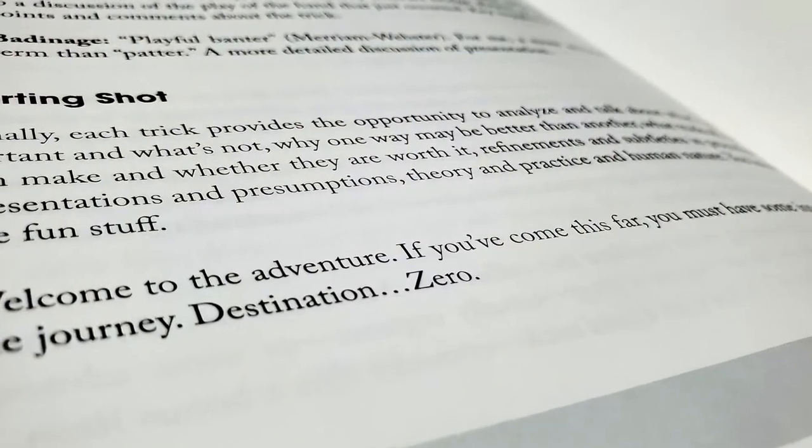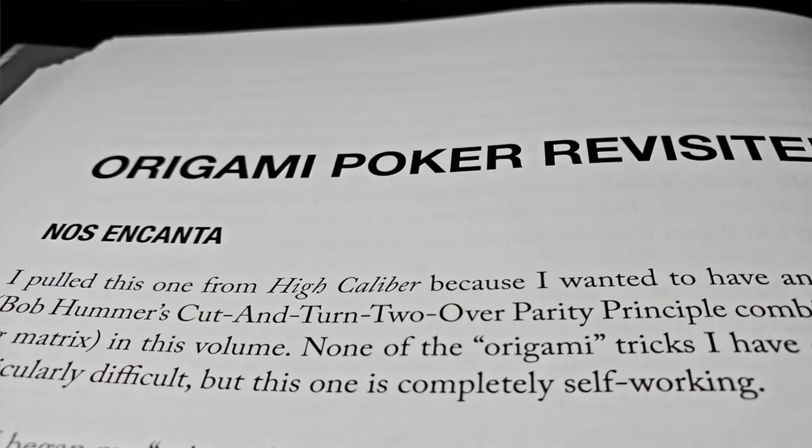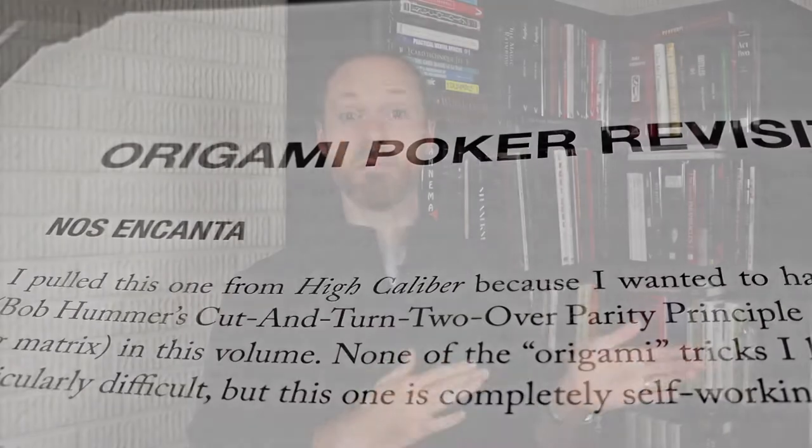And you can definitely tell that he never stops thinking about his tricks, because many of these effects are going to be a second version or a further iteration of something he published previously. Now, that's not to say that there's overlap. I don't think that there is. But there are tricks that started off in another book, like Smoke and Mirrors or Dear Mr. Fantasy, and he's come up with an improvement later that he's now giving to you in this book.